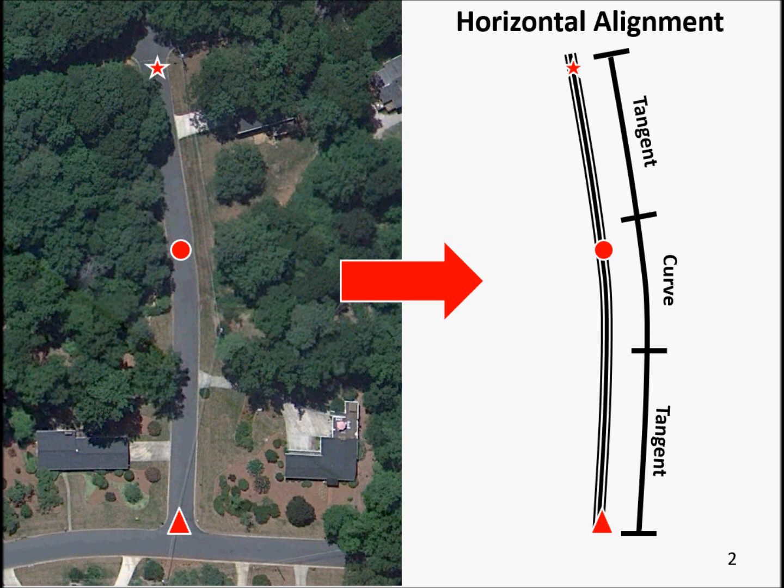The horizontal curves used to provide drivers with the transition from one tangent to the next are typically simple curves, which are an arc of a circle. These curves have a single radius value, which represents the sharpness or flatness of the curve. A tangent roadway section has an infinite radius, since it is a straight line, and a horizontal curve has a single, finite radius.